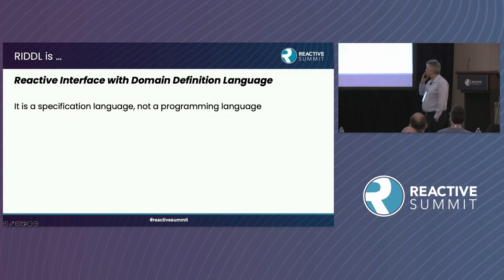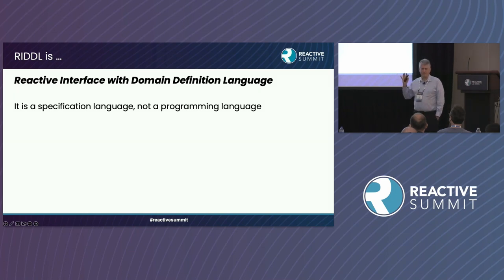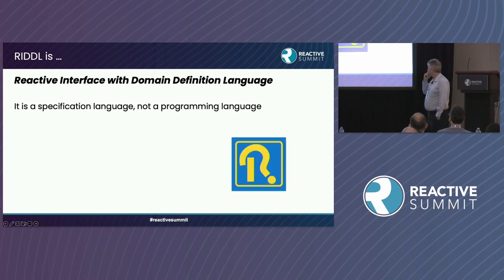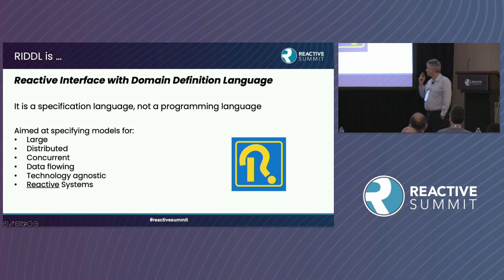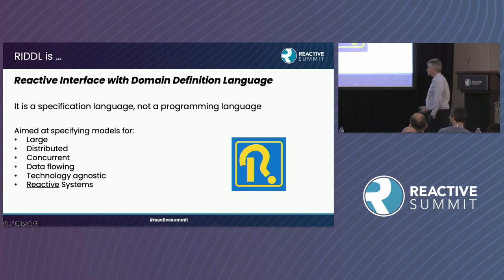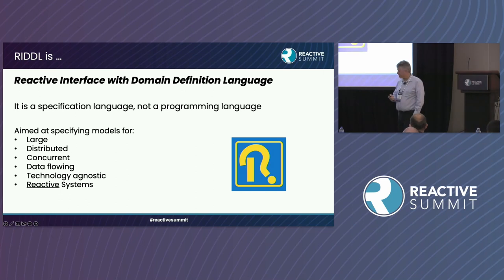It's a specification language, not a programming language — it is not Turing complete. It has a logo and it's aimed at the kinds of systems this audience builds: large, distributed, concurrent, data-flowing, reactive systems.